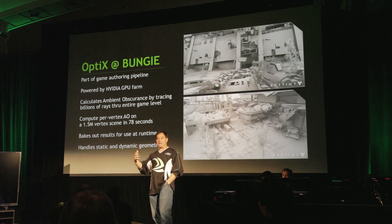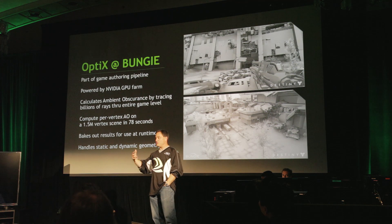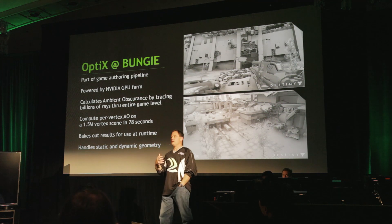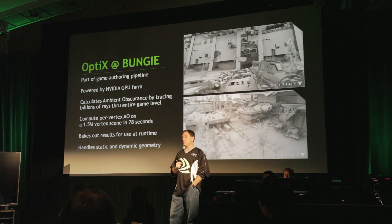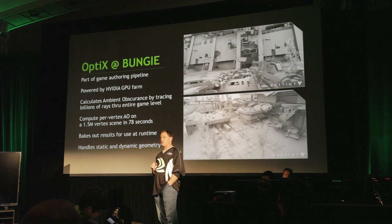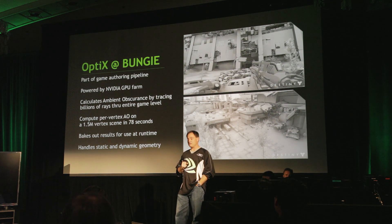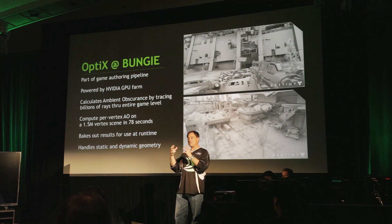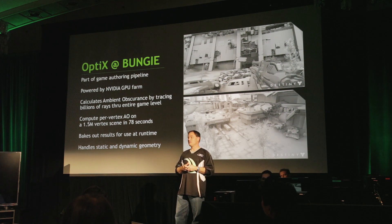You've probably heard NVIDIA say that lots of game developers use NVIDIA GPUs, but you might not know they use them in ways you might not have thought about. They don't just use them for game engine development — they use them as actually core authoring for the game itself. There's a GPU farm at Bungie cranking away, calculating ambient obscurance. You can compute AO on a really complex scene in a little bit over a minute on this GPU farm — an order of magnitude faster than the alternatives. They bake it up for use at runtime so you can basically simulate real-time global illumination in Destiny.